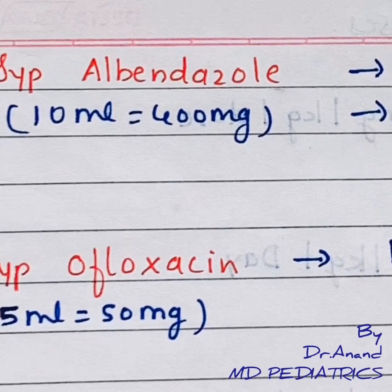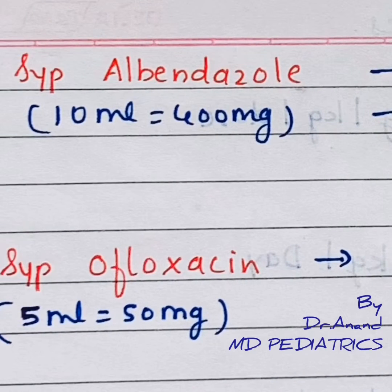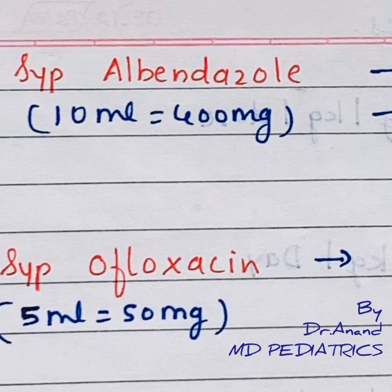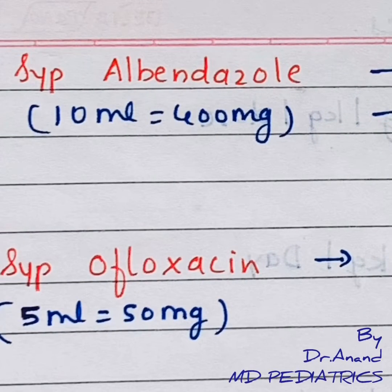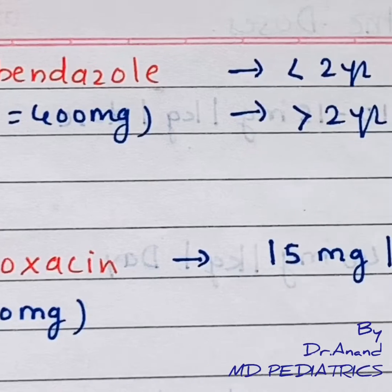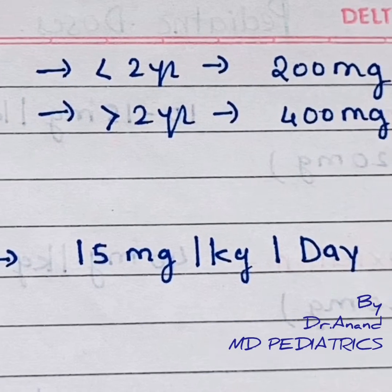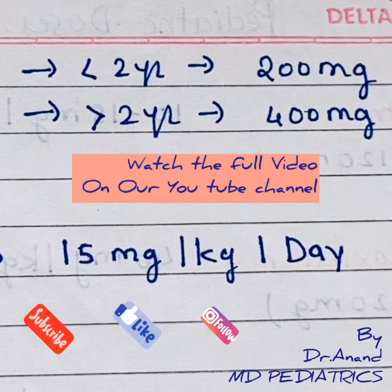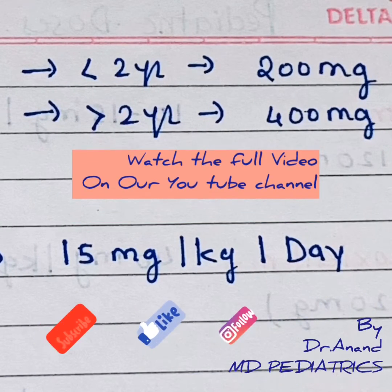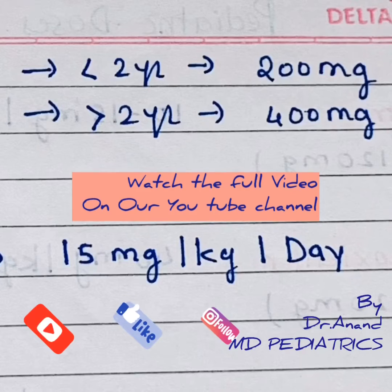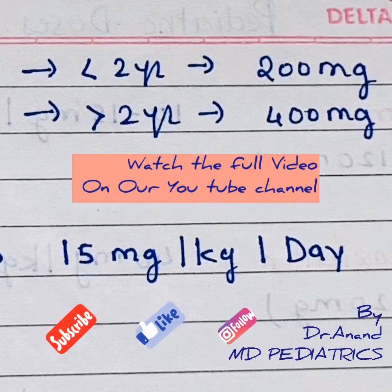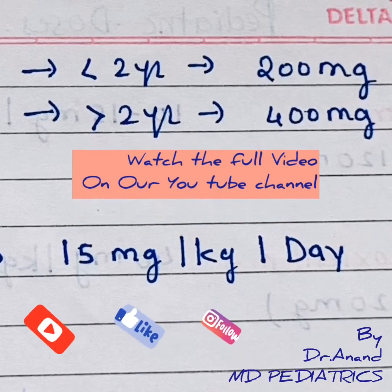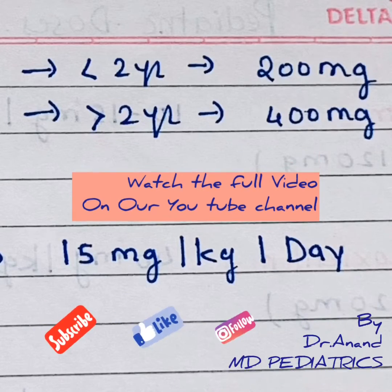Always remember: albendazole syrup comes where 10ml is equal to 400mg. So if the baby is more than 2 years, give the whole 10ml, which is 400mg. If the baby is less than 2 years, then give 200mg, which means 5ml.